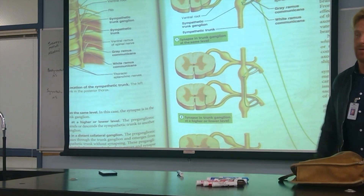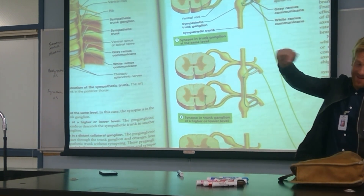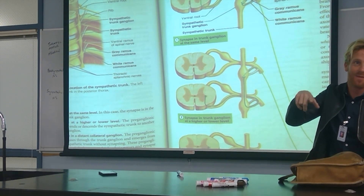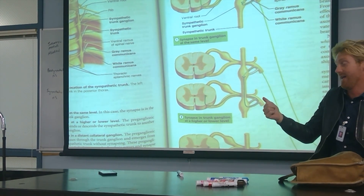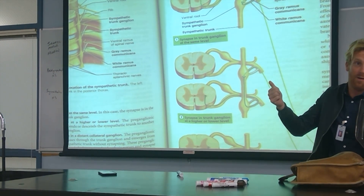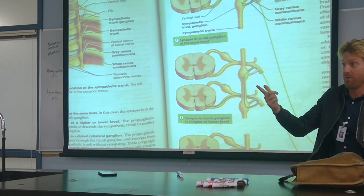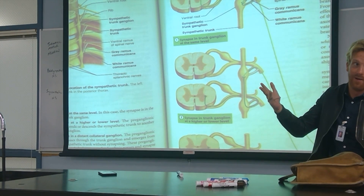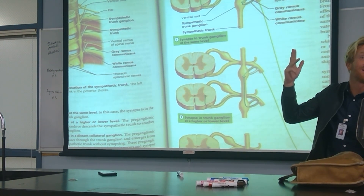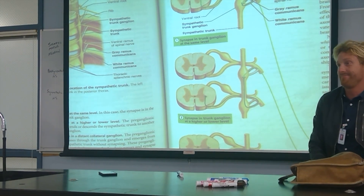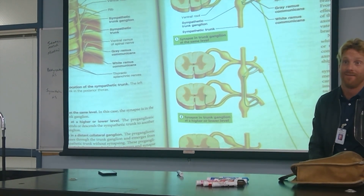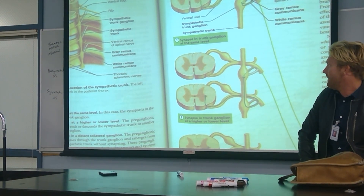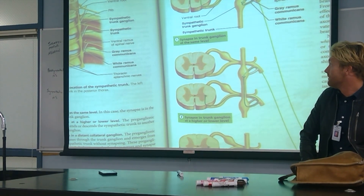This is essentially a freebie on your exam: where are the cell bodies of postganglionic neurons of the sympathetic nervous system located? The answer is the sympathetic trunk — not the lateral horn of the spinal cord, not the central nervous system, and not the target organ. If you remember that, you'll get that question right.